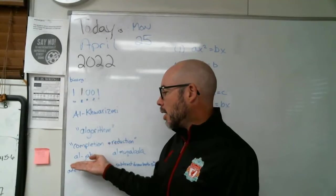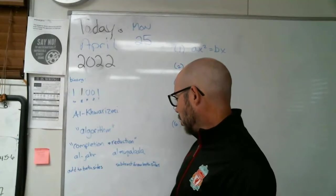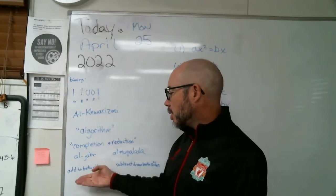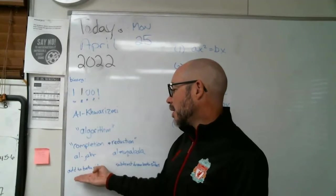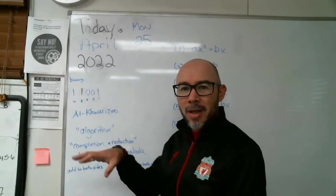Or in Arabic, Al-Jabr and Al-Muqabala. Al-Jabr is the word that we get algebra from. And it basically means to add to both sides. That's what completion means, to add something to both sides.